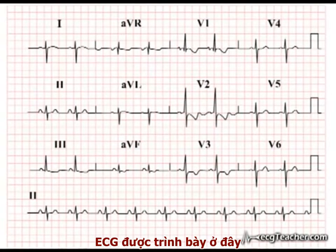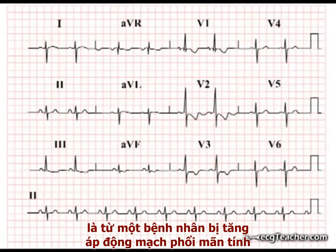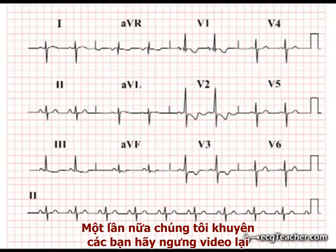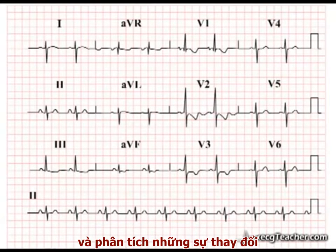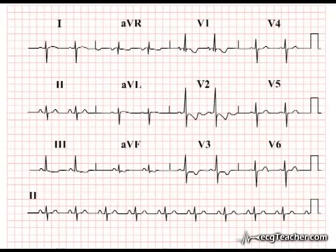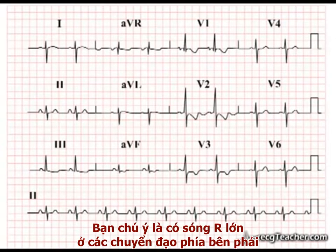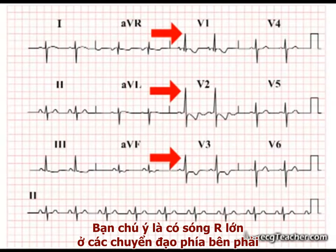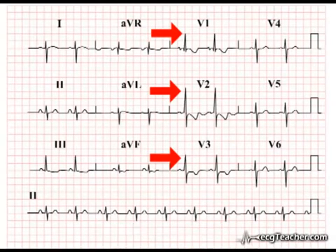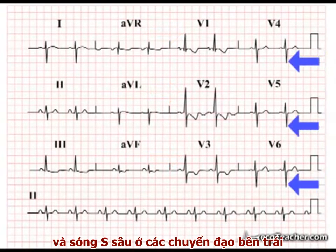The ECG shown here is from a patient with chronic pulmonary hypertension. Again, we would invite you to stop the video at this point and analyze the changes present. You will notice the prominent R waves in the right-sided chest leads and significant S wave activity in those on the left.